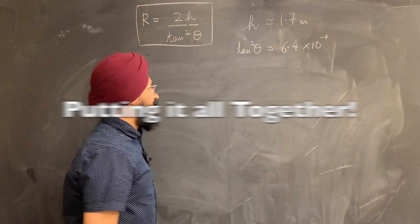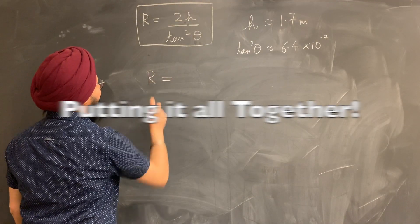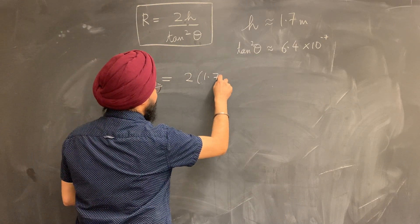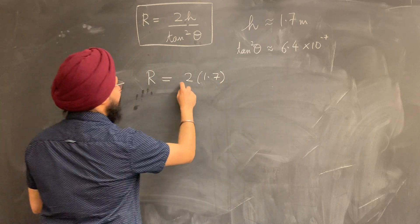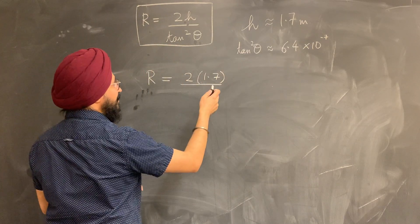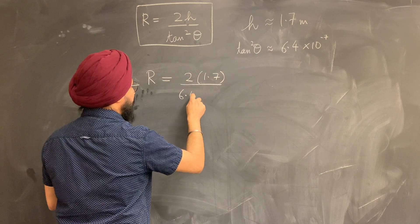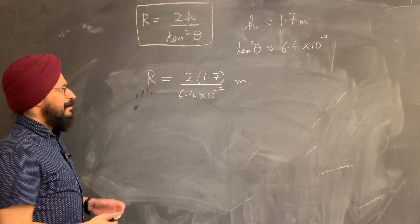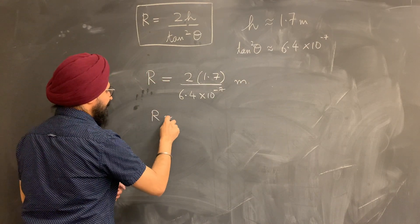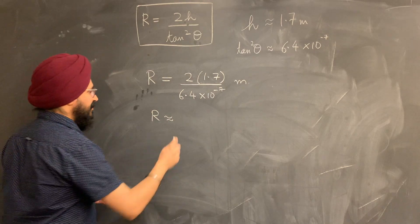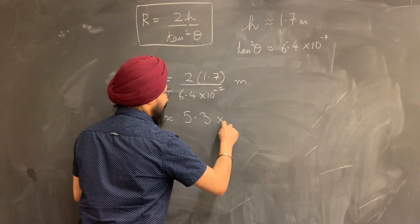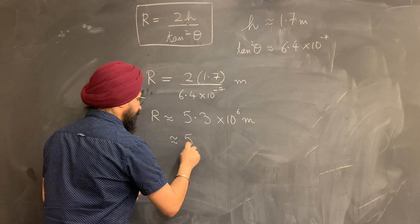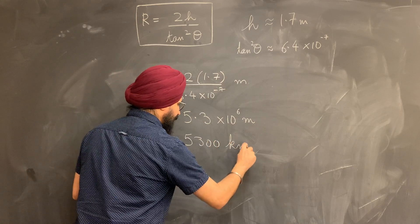Putting it all together, finally, we can approximate our estimate for the Earth's radius to be twice the height. In this case, 1.7 meters, divided by square of the tan of the angle the sun swept, which we found out to be about 6.4 times 10 to the minus 7 meters. Plug in the numbers, and what you would find is that this R, the radius of the Earth, comes out to be about 5.3 times 10 to the 6 meters, which is basically 5,300 kilometers.